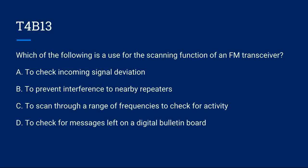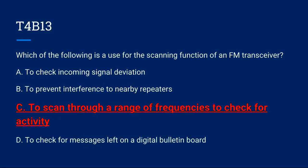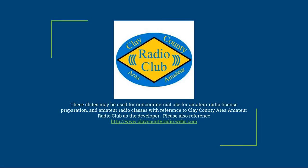T4B13: Which of the following is a use for the scanning function of an FM transceiver? A. To check incoming signal deviation. B. To prevent interference to nearby repeaters. C. To scan through a range of frequencies to check for activity. Or D. To check for messages left on a digital bulletin board. Correct answer is C. To scan through a range of frequencies to check for activity. That concludes this video of our series. These slides may be used for non-commercial use for amateur radio license preparation and amateur radio classes with reference to the Clay County Area Amateur Radio Club. Please visit our website at www.claycountyradio.webs.com. I would encourage you to subscribe. Thank you, I'll see you next time.